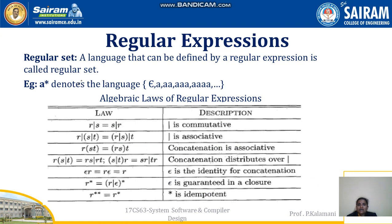A regular set is any language that can be defined by a regular expression. For example, a* denotes the language {epsilon, a, aa, aaa, ...} and so on. The algebraic laws of regular expressions include: r|s = s|r (union is commutative); union is also associative; concatenation is associative, i.e., r(st) = (rs)t; concatenation distributes over union; epsilon·r = r·epsilon = r; r* = (r|epsilon)*; epsilon is guaranteed in a closure; and (r*)* = r* (star is idempotent).